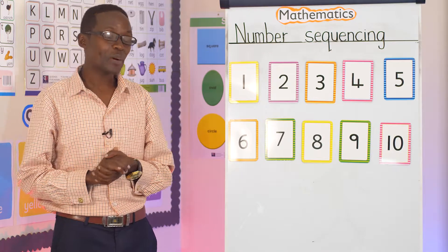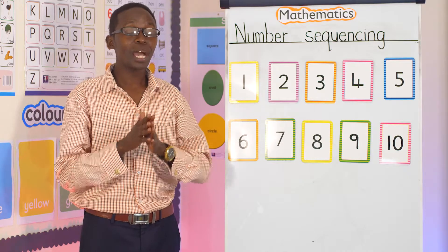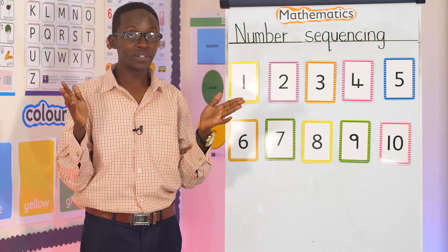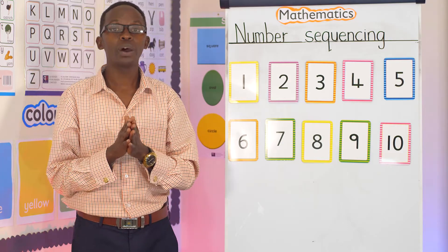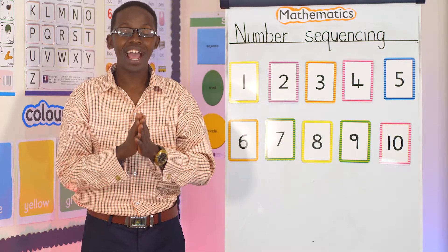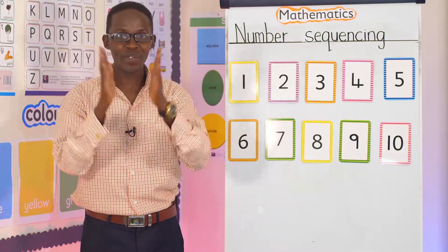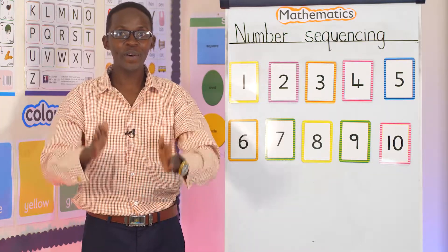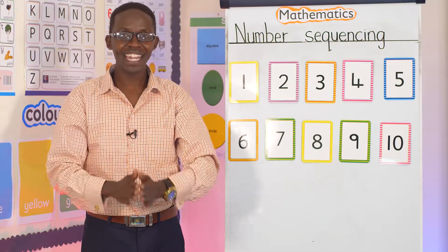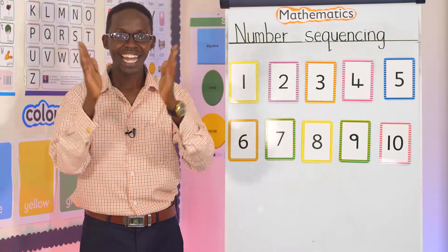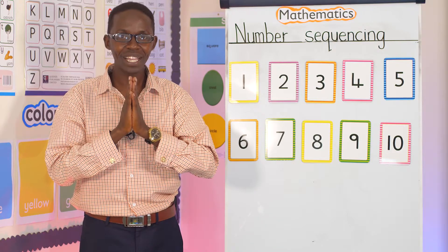Now, I want us to clap one up to ten. So you know numbers. Let's do together. One, two, one, two, three, four, five, six, seven, eight, nine, ten. Can we clap again?